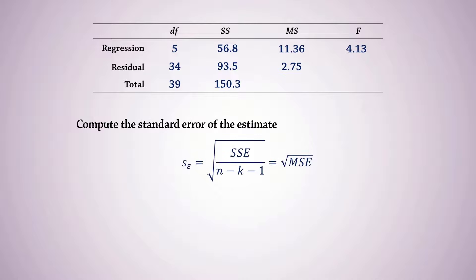For the standard error, we can simply take the square root of the mean squared error of 2.75 here, and that gives 1.658.